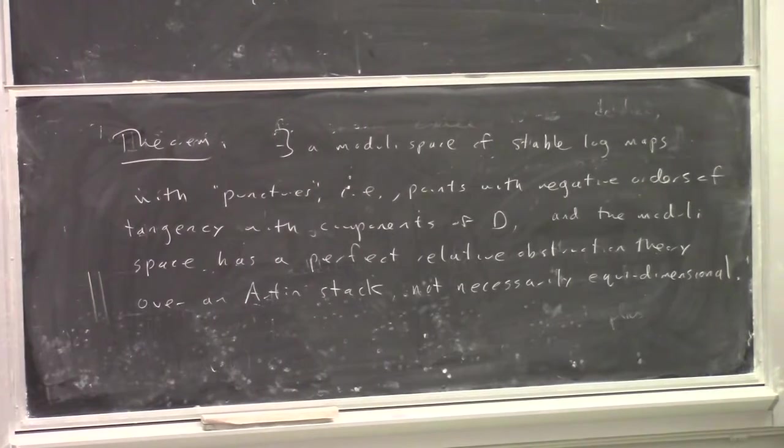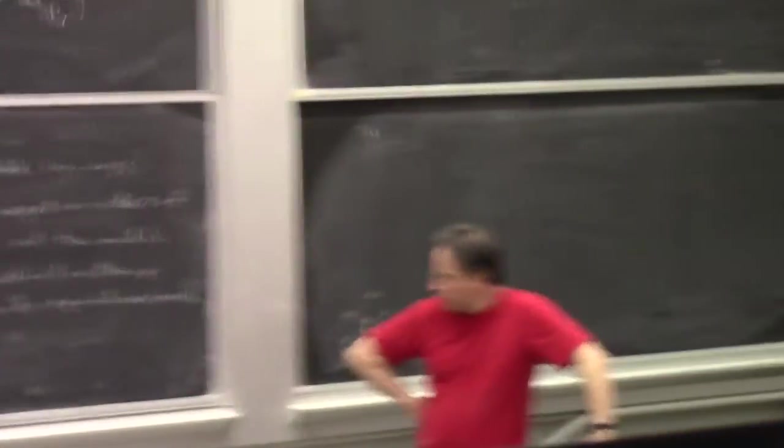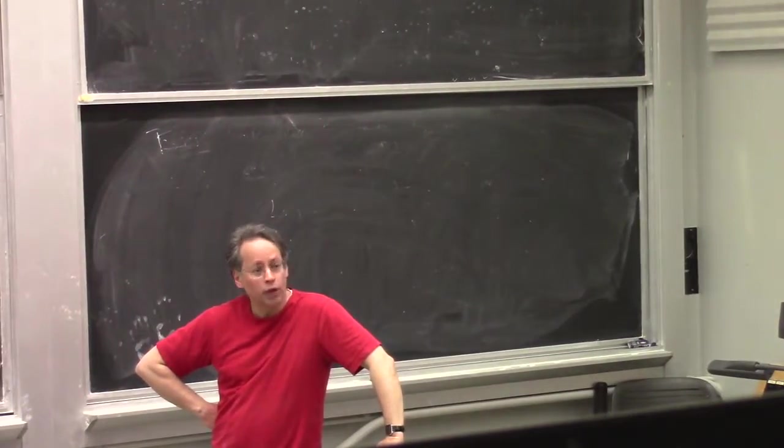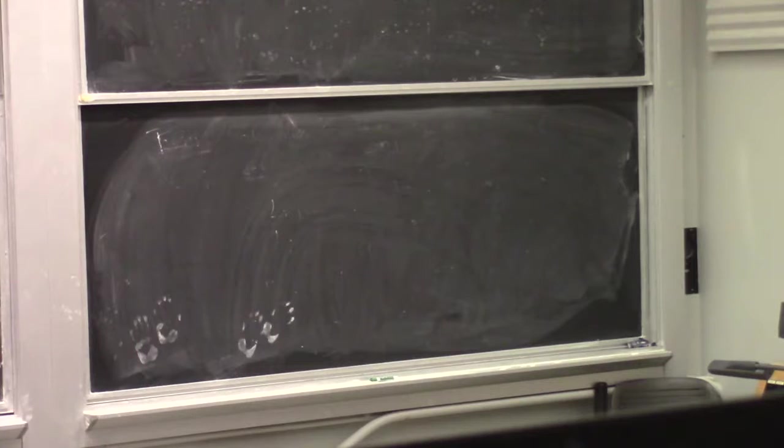When you say that relative obstruction theory relative to what? I didn't want to tell you what the stack is. It's a very complicated object. But essentially, the reason is that there are combinatorial obstructions to deforming which you can't realize. So you have to put it in by hand in the structure of the stack. Can I imagine the structure of the stack is recording somehow the combinatorics of the curves?